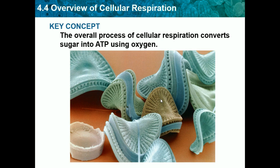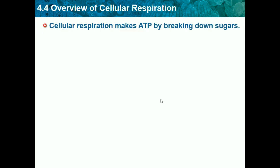Animals and plants both do cellular respiration and we use this to get energy from our food. Cellular respiration makes ATP by breaking down sugars, or our food.